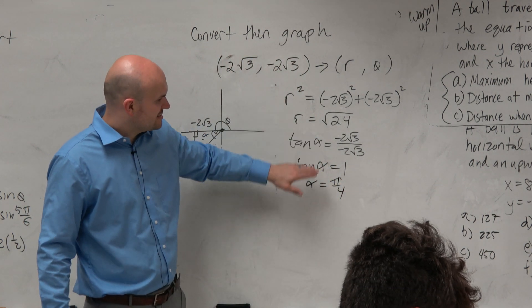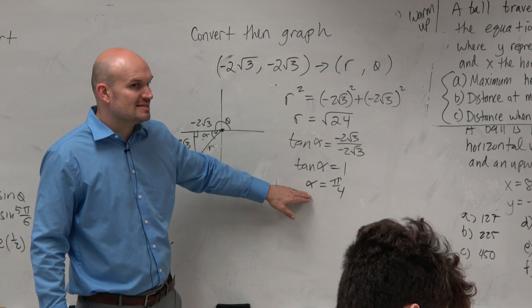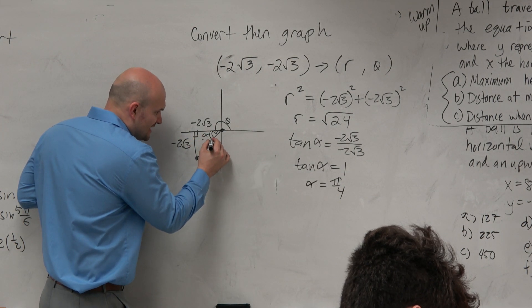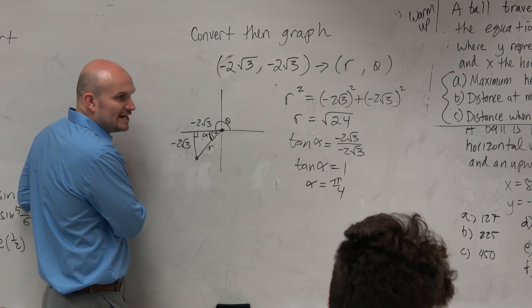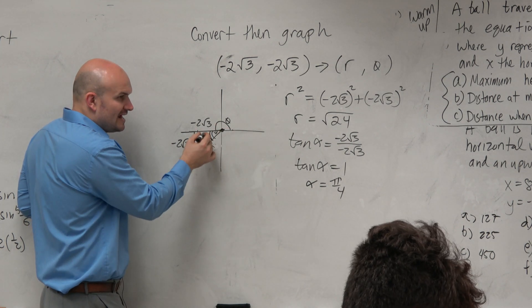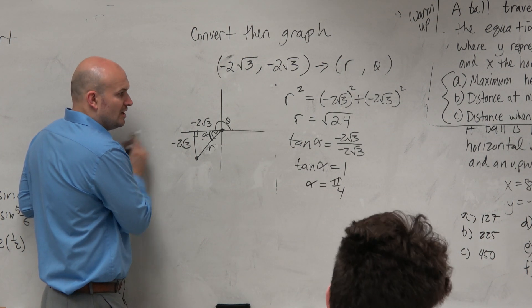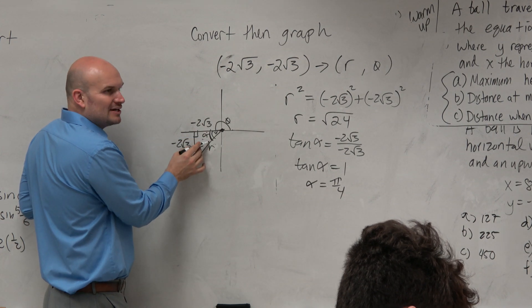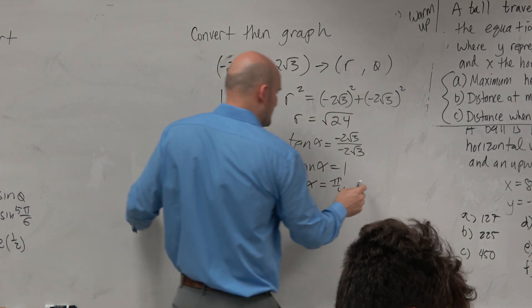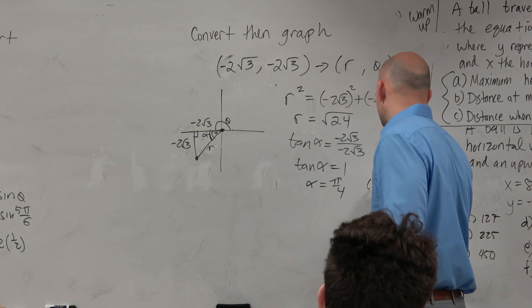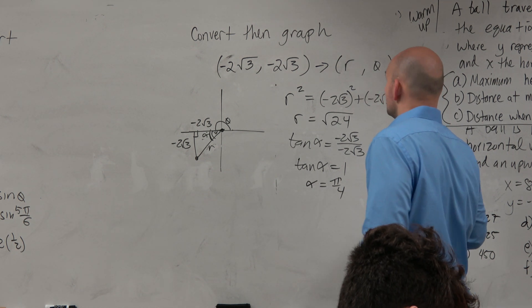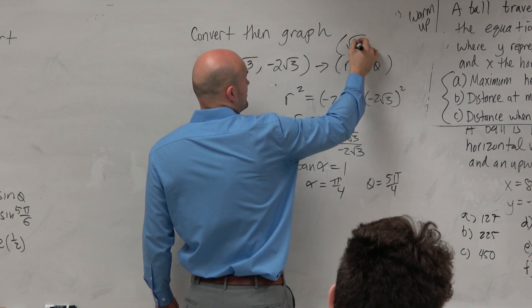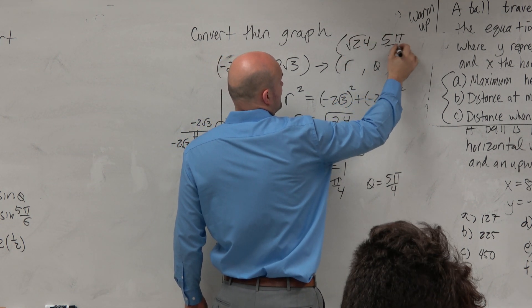So now we have a radius and we have an angle. But that is the angle, again, of the triangle, from here to here. That is not standard form of the angle. Standard form is from there to there. From here to here is how many fourths? 4 fourths, and you've got to add an extra fourth, so it's 5 pi over 4. So your angle of the triangle is pi over 4, but theta is 5 pi over 4. So when I ask you to convert this, the conversion is square root of 24 comma 5 pi over 4.